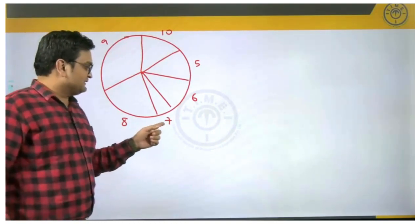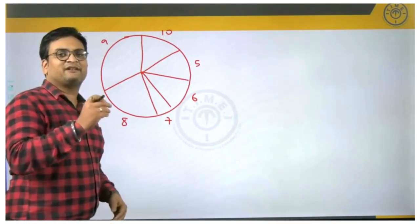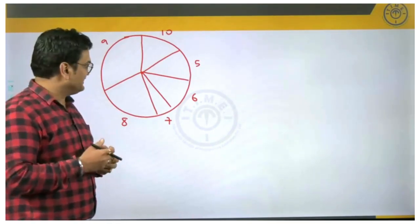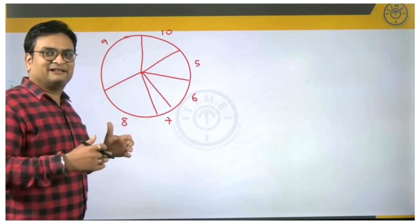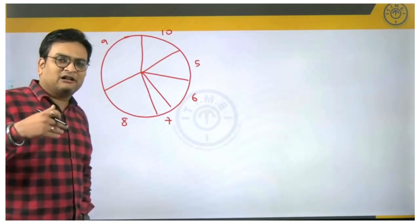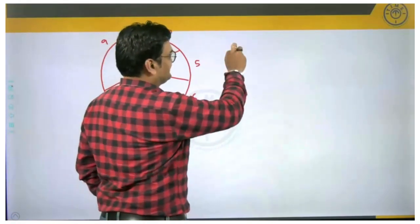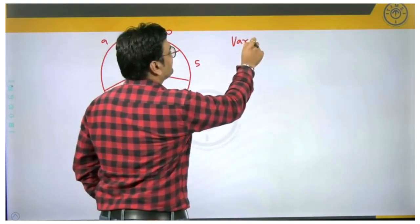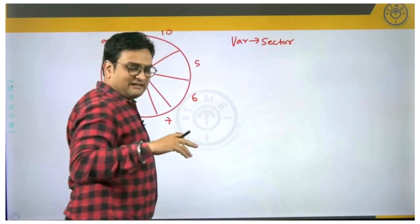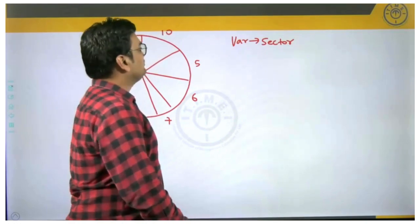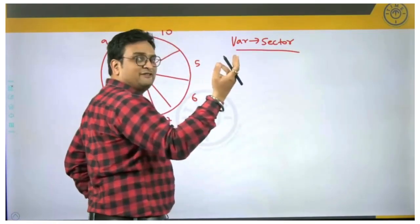For example, one may notice that class 7 has the smallest sector and hence we can conclude that class 7 must have had the least number of students. Similarly, class 9 appears to be the largest and thus we can conclude that class 9 will have the maximum number of students. So the variable is represented using the sector, and we need to understand how the value of the variable is given.